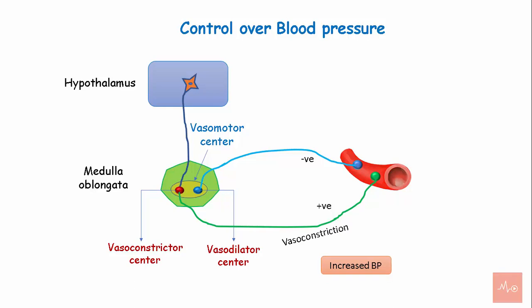When the preoptic nuclei are stimulated, the vasodilator area in the vasomotor center of the medulla oblongata sends signals to the blood vessels causing vasodilation, and there is a decrease in blood pressure.